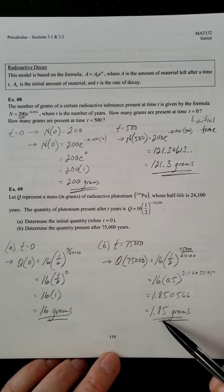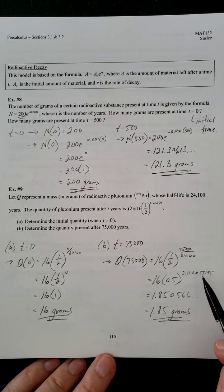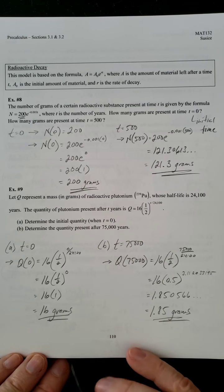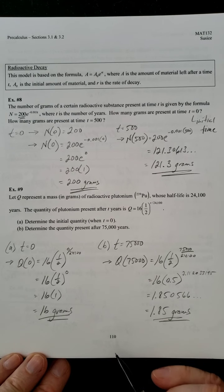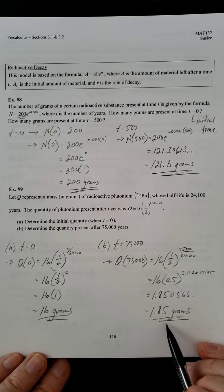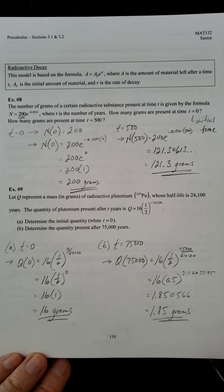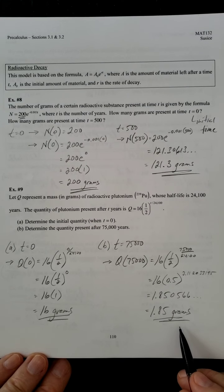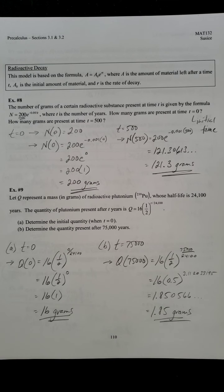So after 75,000 years, it's about two grams left, which should hopefully make sense. Remember, after 24,000 years, it's going to get cut in half. So there it drops it down to eight. And then another 24,000 will drop that eight down to four. And then another 24,000 after that will drop it from four to about two. And that's a little bit more than three times as much as that. So it should be a little bit less than two grams as a result, because it's more than three times the half-life. So that should be right.